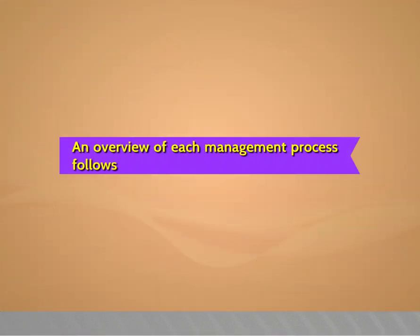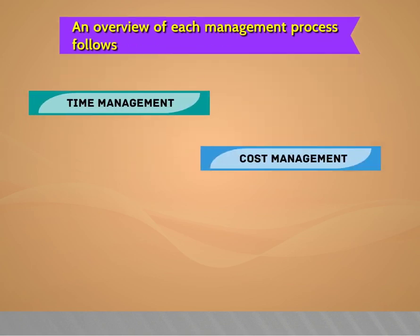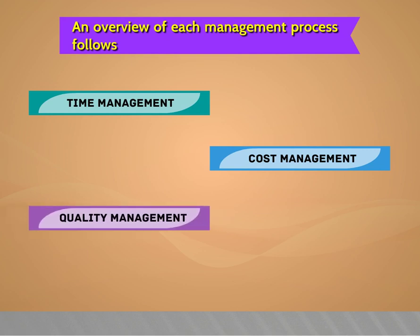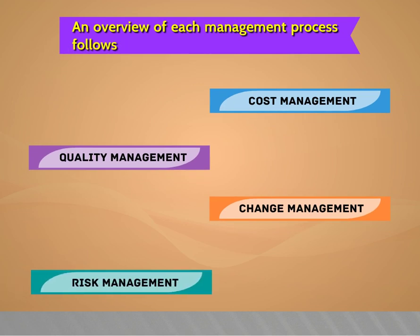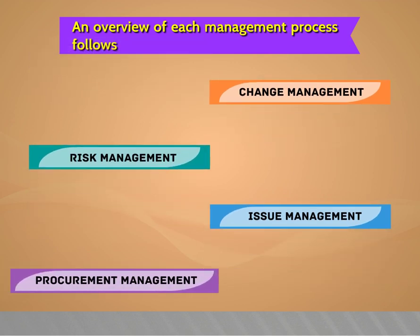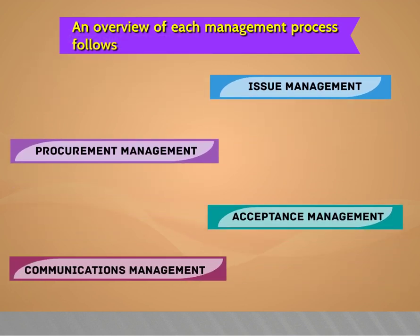While the project team is physically producing each deliverable, the project manager implements a series of management processes to monitor and control the activities being undertaken. These processes include: time management, cost management, quality management, change management, risk management, issue management, procurement management, acceptance management, and communications management.